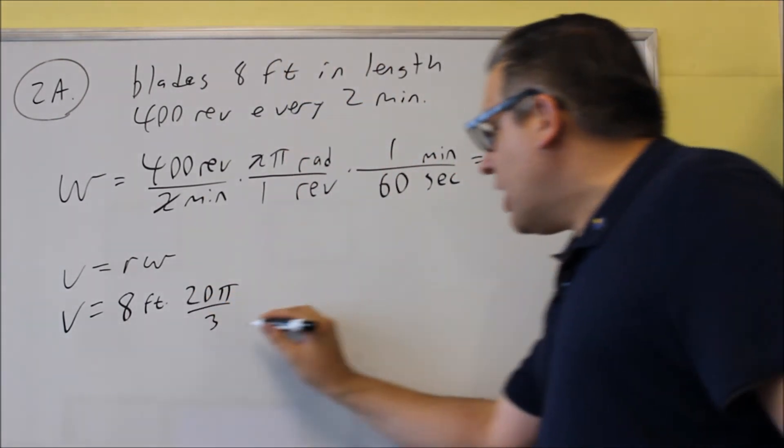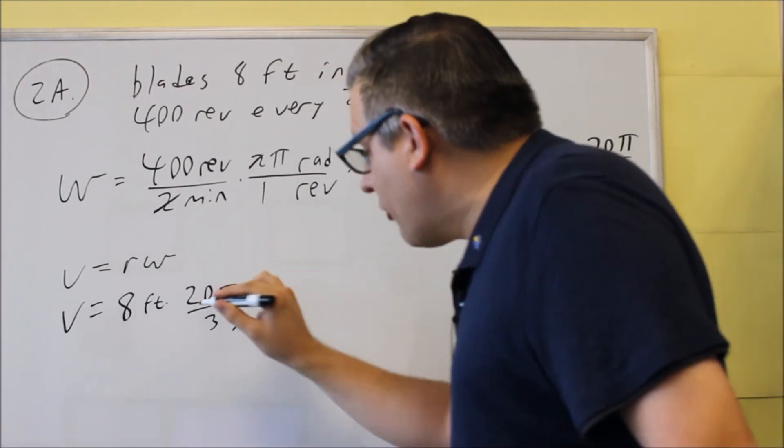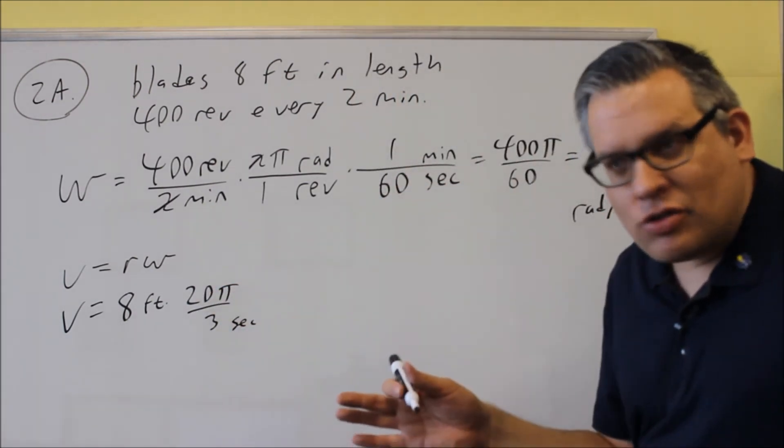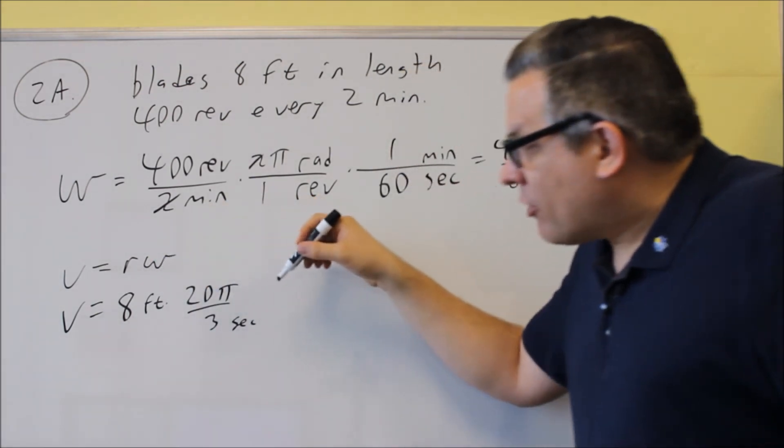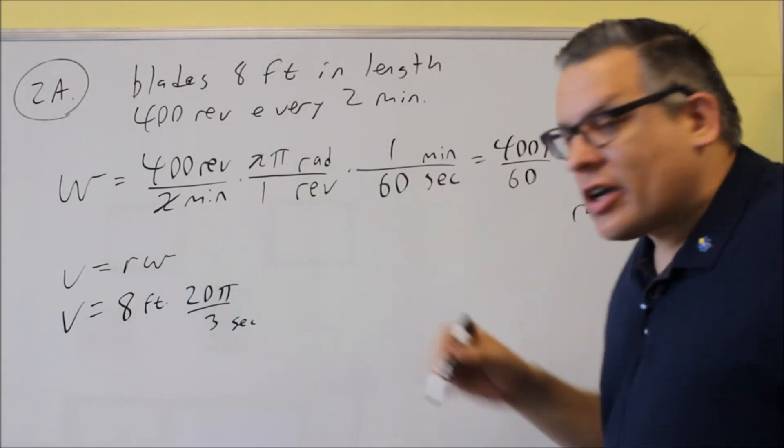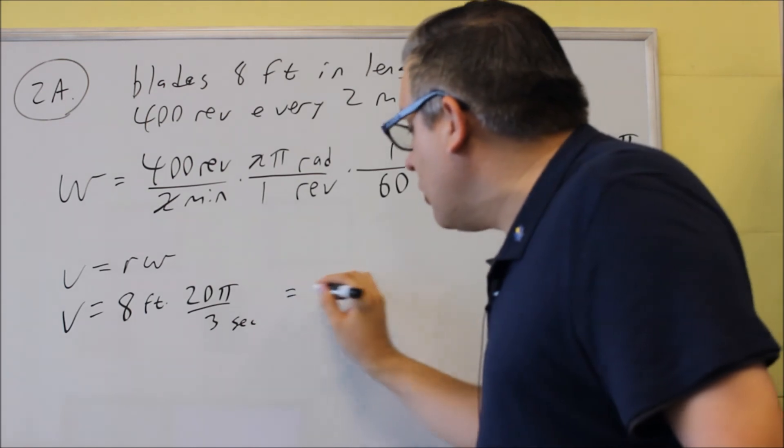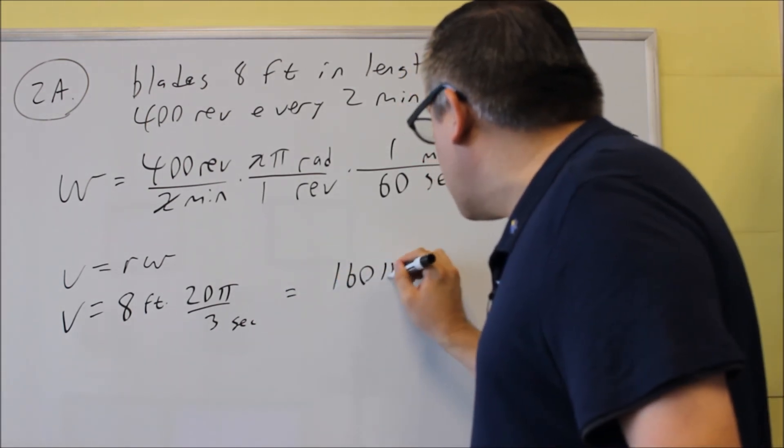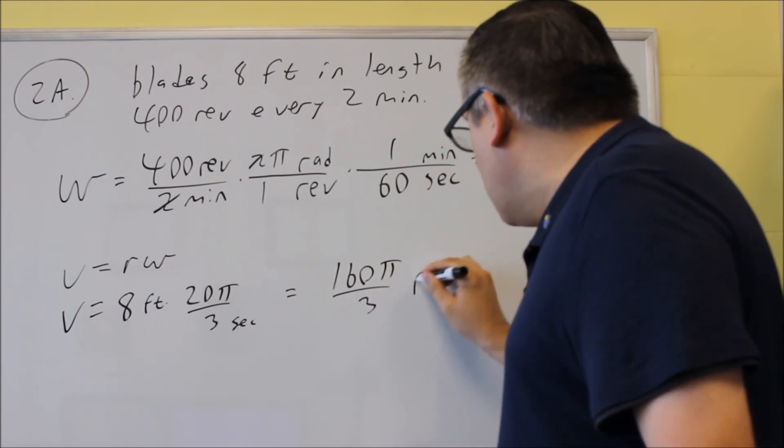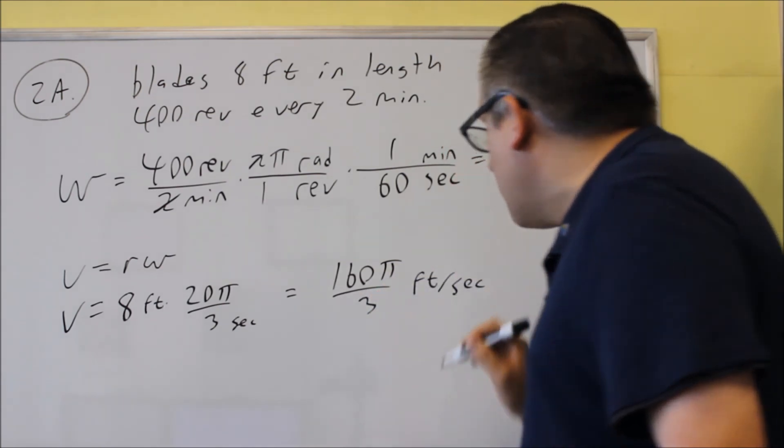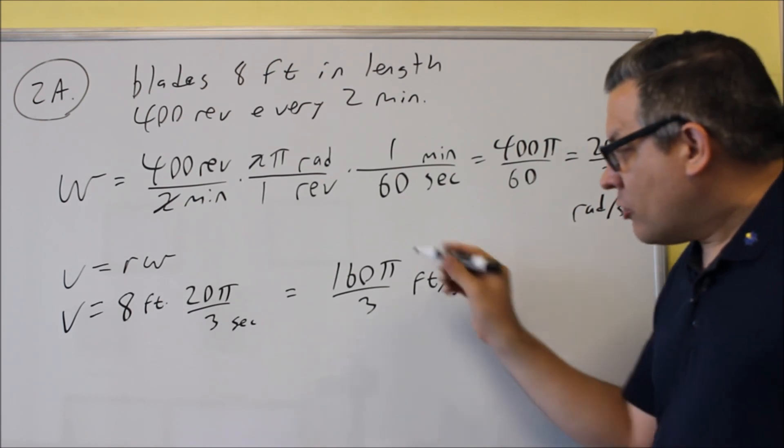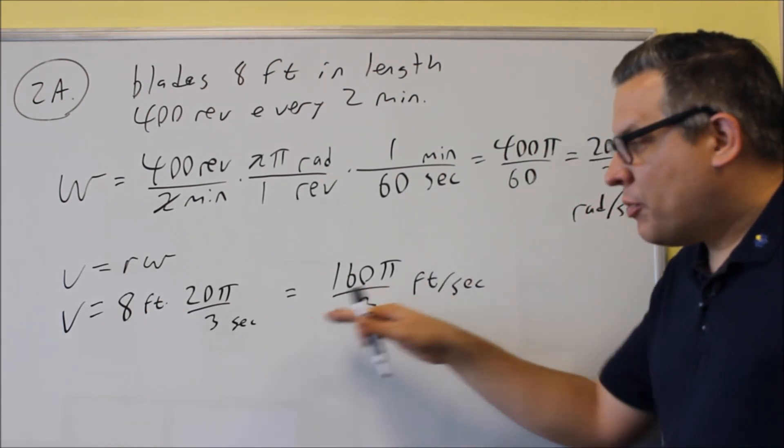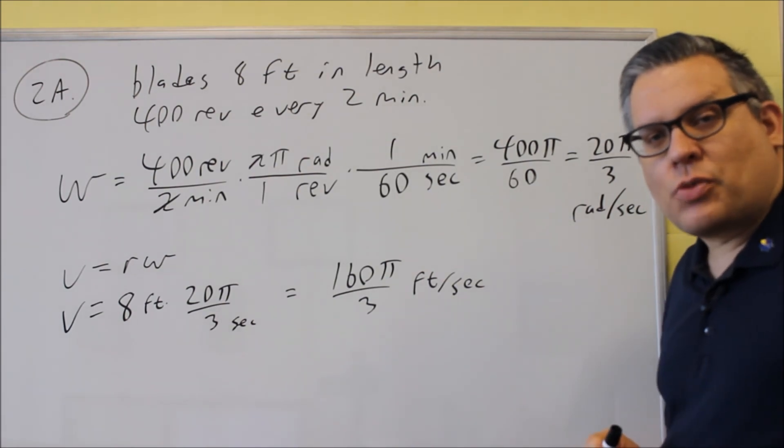Now on the bottom we have seconds and we do have radians there but radians are considered a dimensionless unit. So actually all we have to worry about is just the feet and the seconds left over. That will give us the units for what we're looking for. Multiply across it will be 160π over 3 and again that unit would be in terms of feet per second. So 160π over 3 feet per second. That would be the linear speed and so that answers this problem.